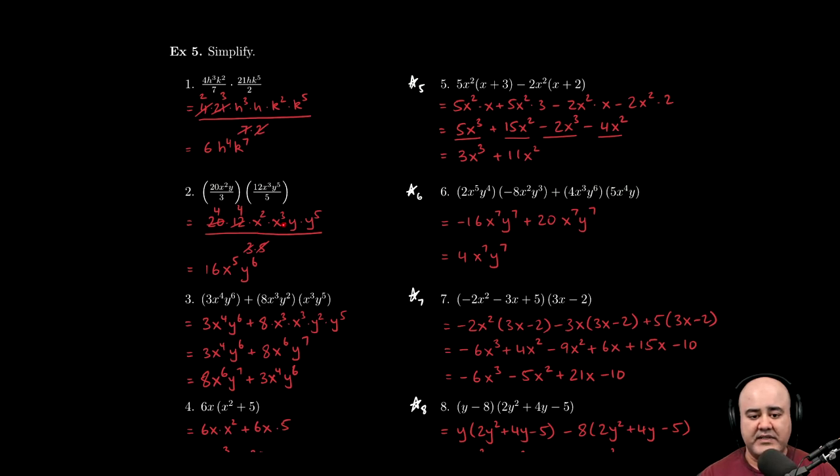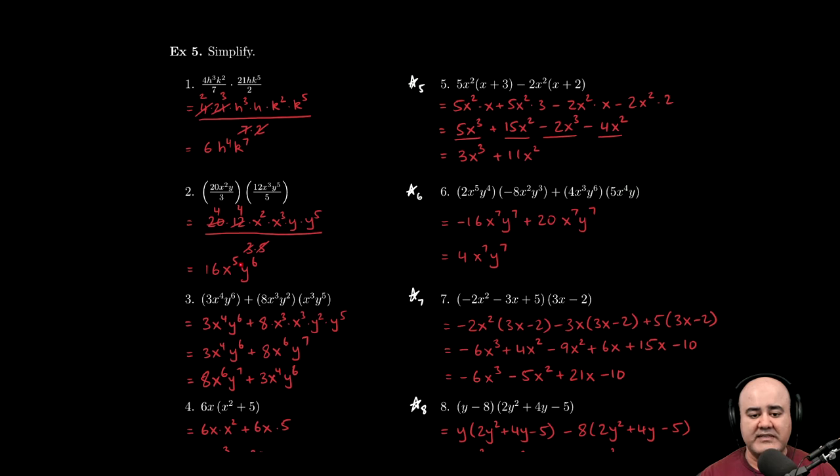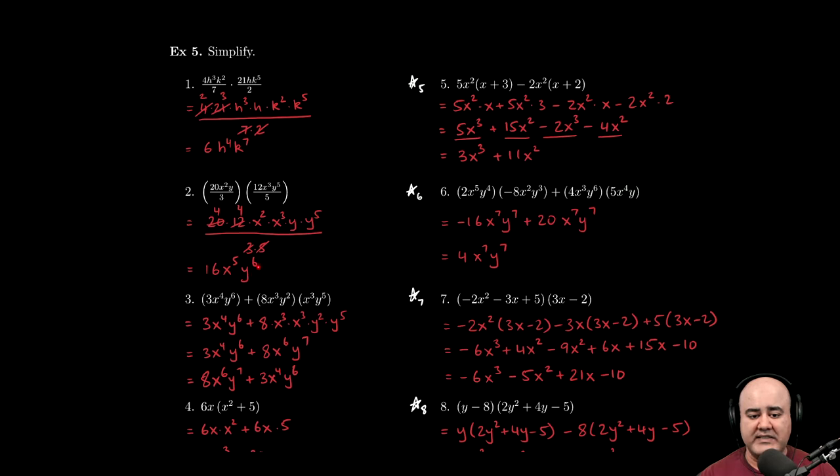x squared times x to the 3rd will yield x to the 5th. And then finally, y times y to the 5th will give us y to the 6th. Bases are same. We're multiplying, so we add the exponents.